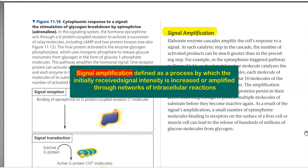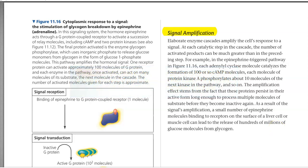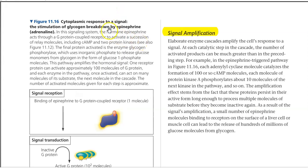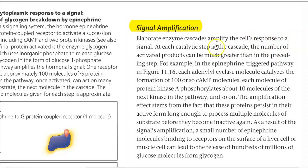That is, here we are going to see how glycogen breakdown is taking place with the help of epinephrine or adrenaline that acts as a signal or ligand molecule. So, elaborate enzyme cascades amplify the cell's response to a signal. At each catalytic step in the cascade, the number of activated products can be much greater than in the preceding step.